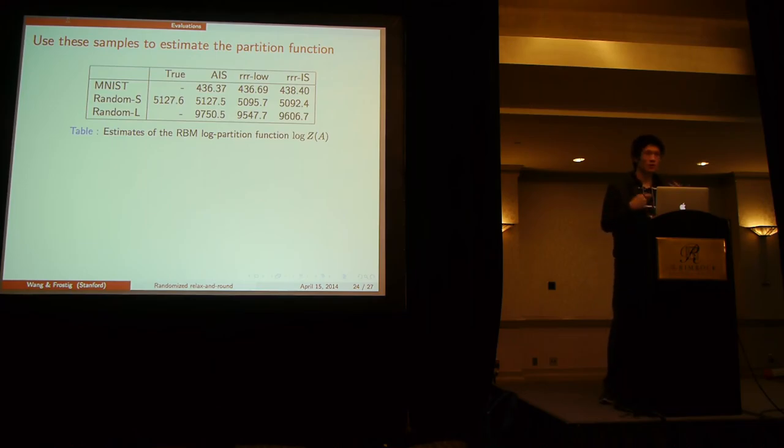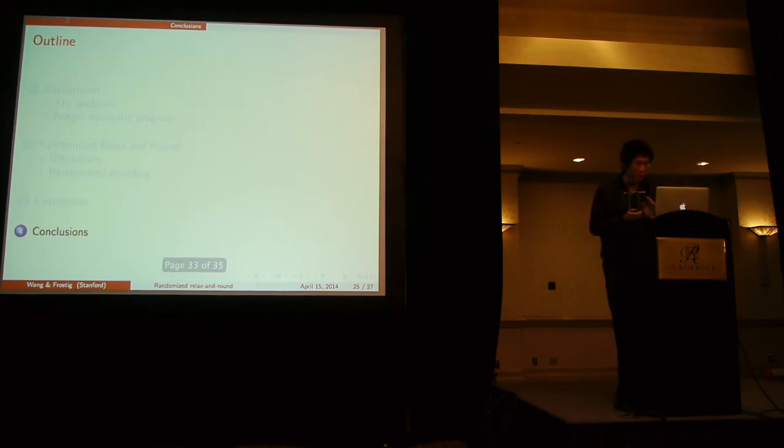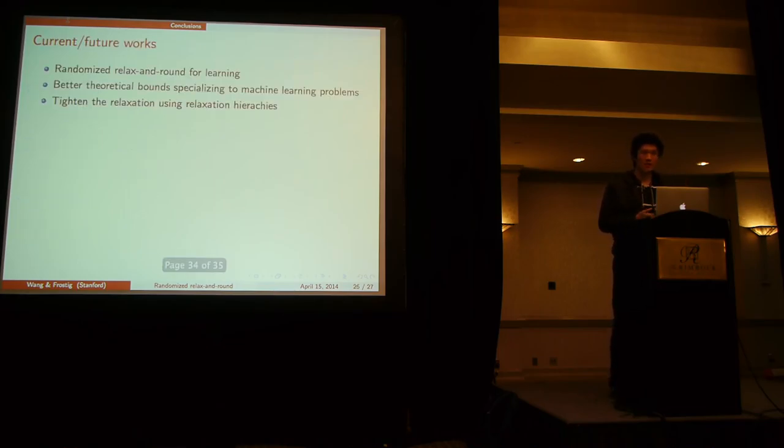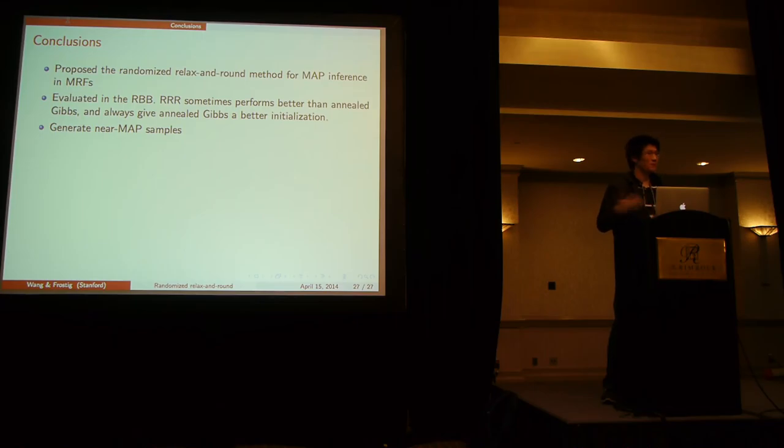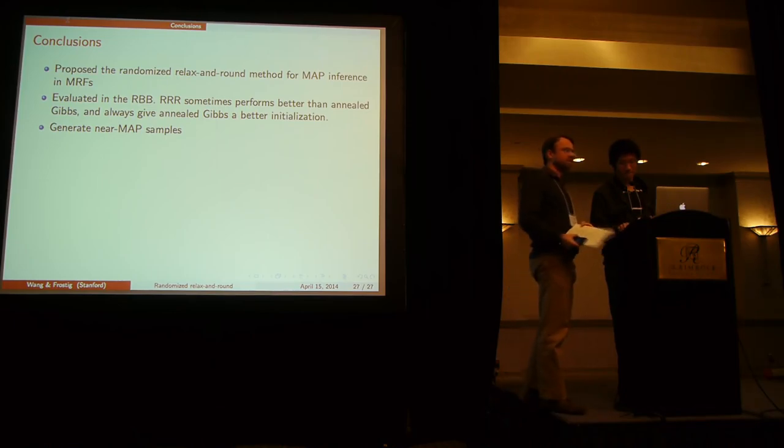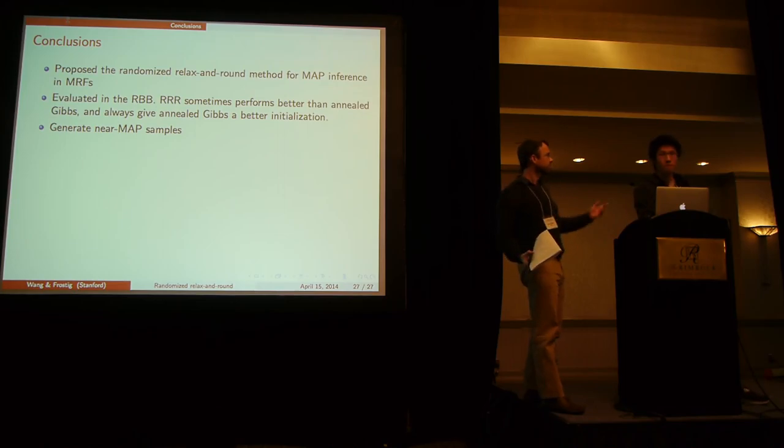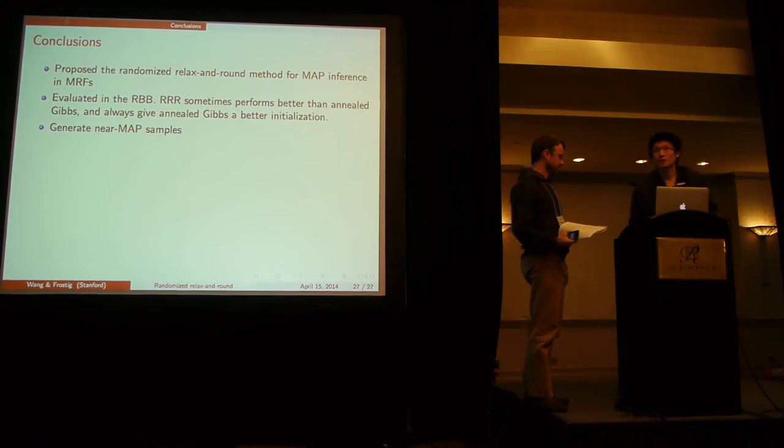So given the samples you can also use it to estimate the partition function via importance sampling. So that's basically the work and we are still continuing to work on some aspects of this like incorporating learning, tightening the relaxation using hierarchies and others. So yeah we presented a randomized, relaxed, and round method and evaluated a few tasks and generated some samples.